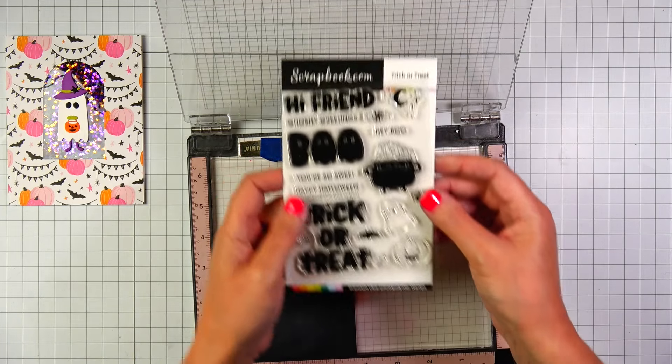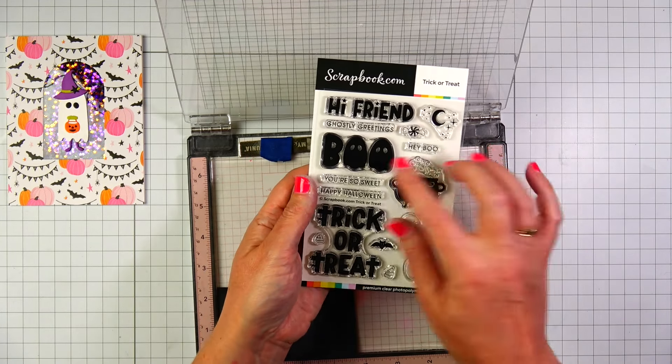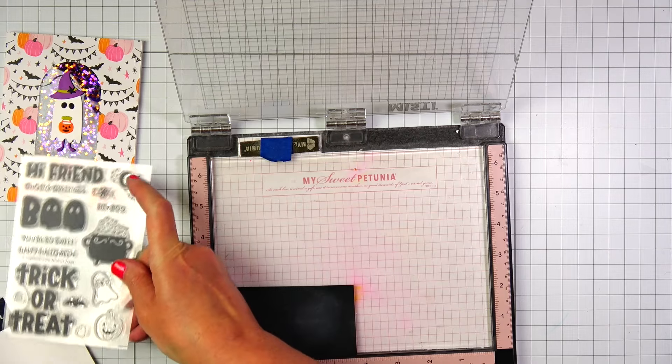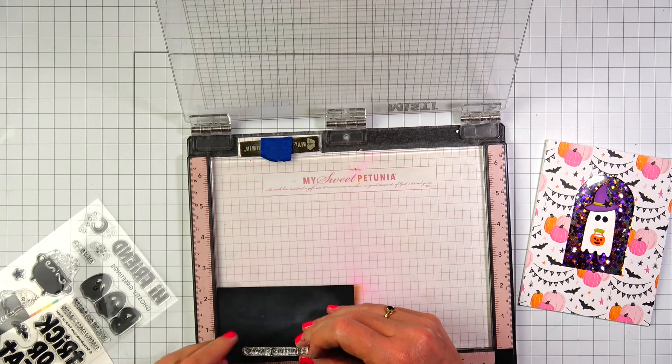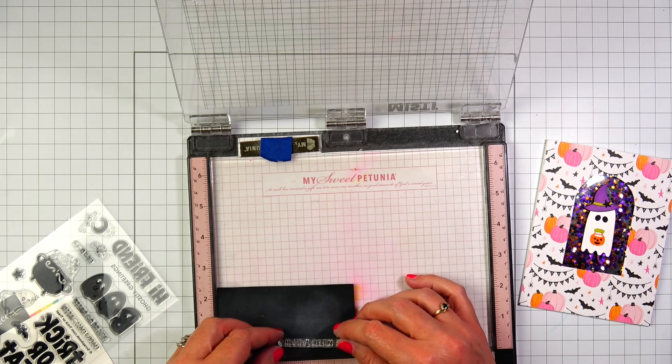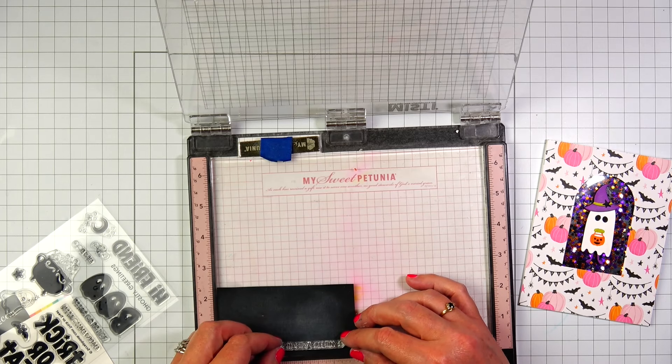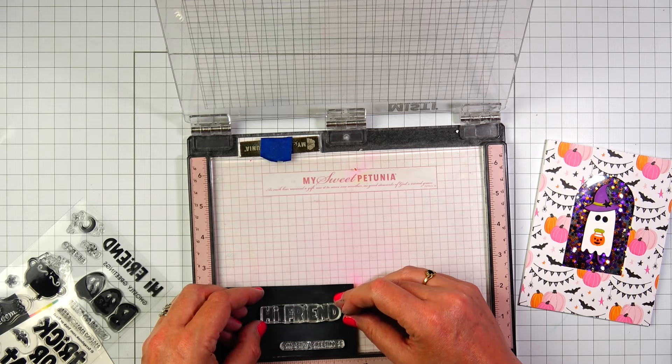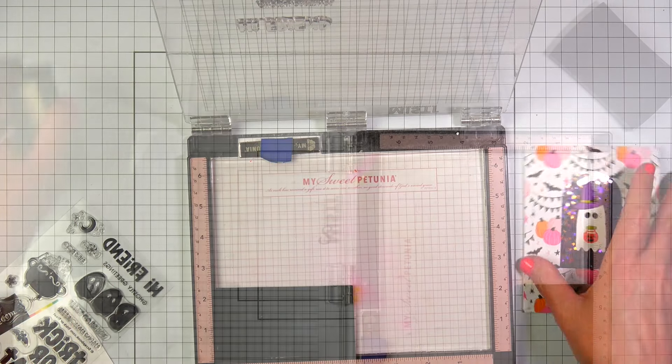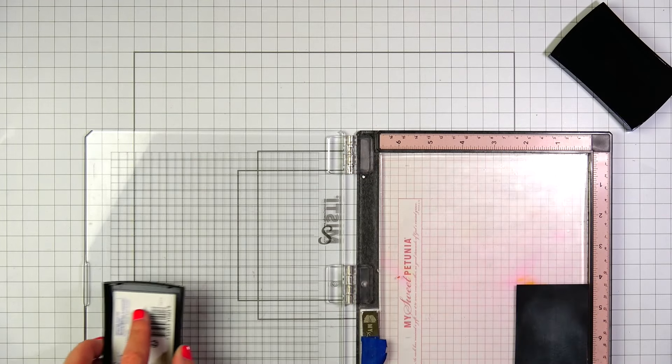So the last thing we need to do for the card is make a sentiment. So I'm pulling ghostly greetings from the trick or treat stamp set. And I'm going to white heat emboss that sentiment onto black cardstock. I did pull one more sentiment from the stamp set too, to heat emboss. So I had that for a future card.